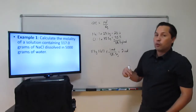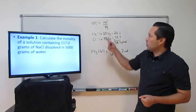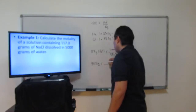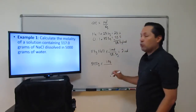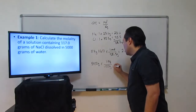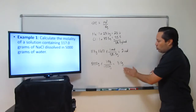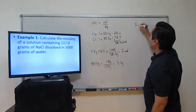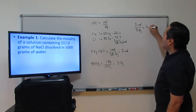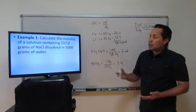Those 2 moles are the numerator. For our denominator we have 5,000 grams of water, and we want to convert to kilograms. The relationship is 1 kilogram = 1,000 grams, so 5,000 grams gives us 5 kilograms. Now we divide 2 moles over 5 kilograms, and that gives us 0.4 cursive M — so the molality is 0.4 molal. That is example 1. Let's move on to example 2.